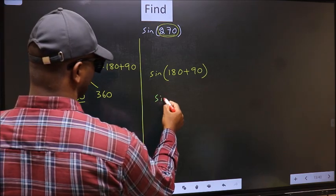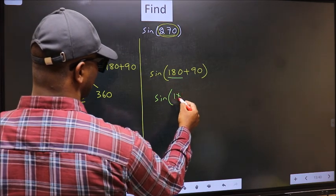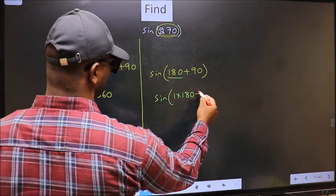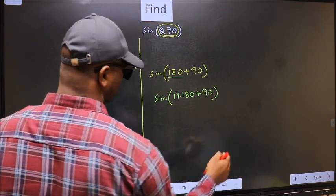Sine. Now in place of 180, we should write 1 times 180 plus 90. Next.